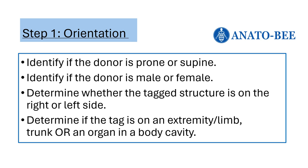We will now discuss four different considerations to apply to each question on the lab practical exam. The first step is always orienting yourself. When first seeing the tagged structures, determine if the donor is prone or supine, then if the donor is male or female. Next, identify if the tagged structure is on the right or left side. Finally, determine if the tagged item is on a limb or on the trunk, and if not, determine which body cavity the pinned item is in.